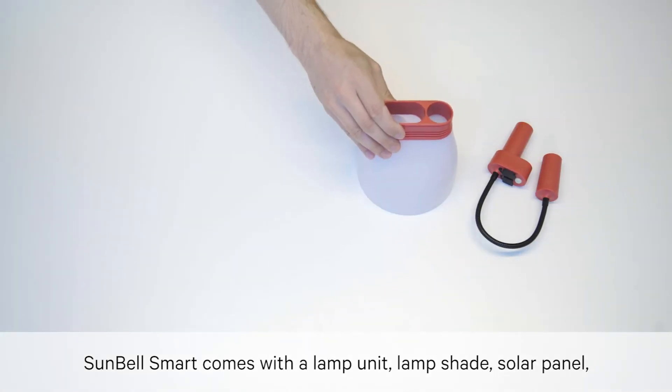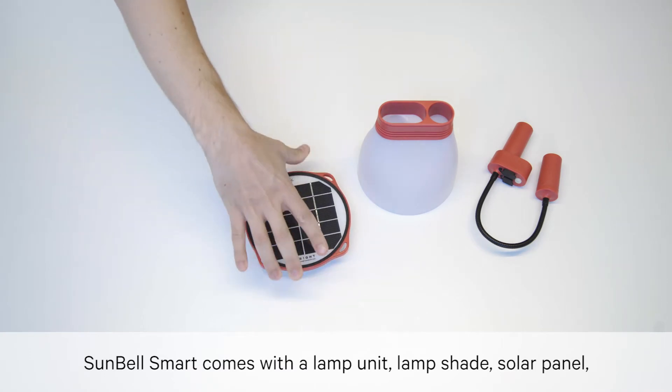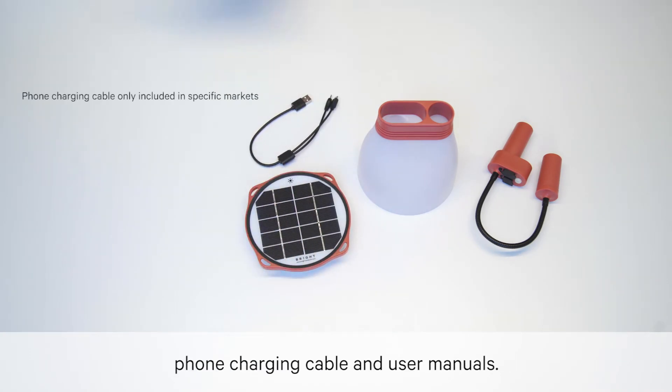Sunbell Smart comes with a lamp unit, lampshade, solar panel, phone charging cable and user manuals.